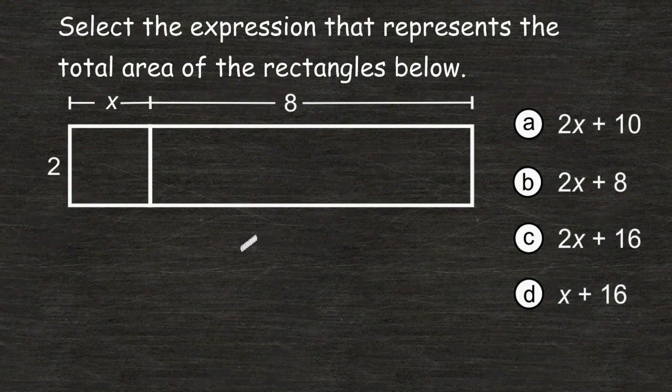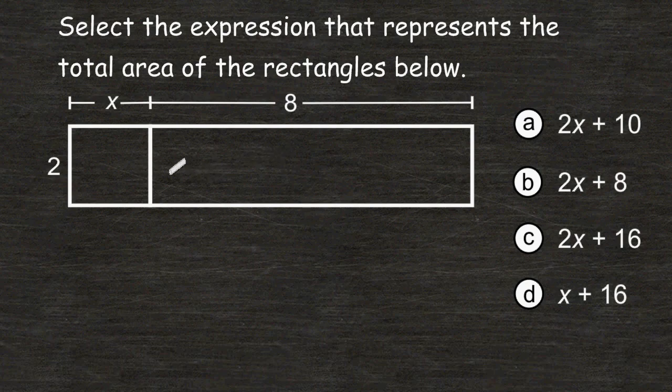One way to solve the problem is to first find the area of this rectangle, which actually looks like a square, and find the area of this rectangle, and then just add those two areas together.